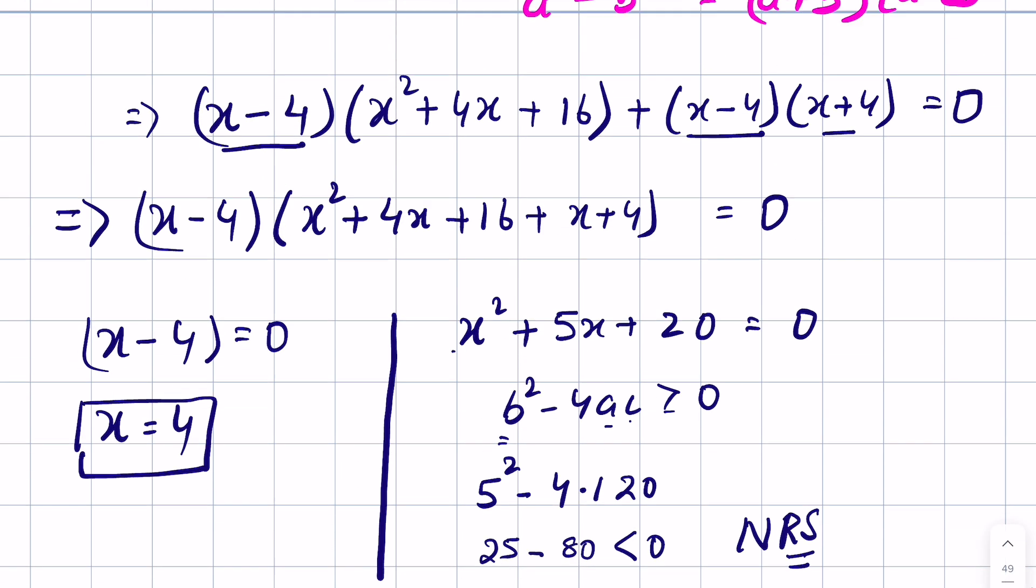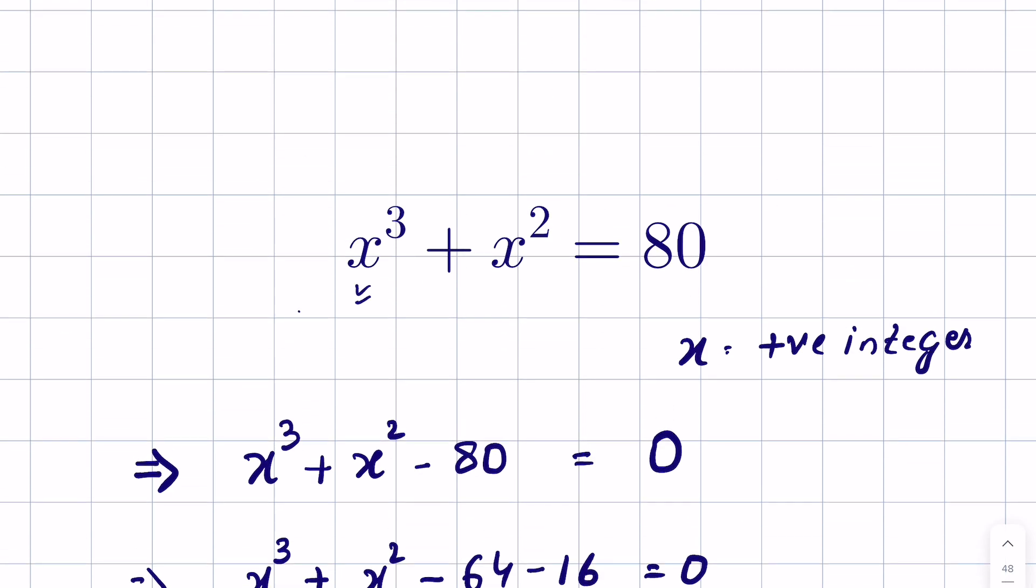We can check the answer by substituting x = 4: 4³ + 4² = 64 + 16 = 80. LHS equals RHS, so our answer is correct. Like and subscribe, thanks for watching!